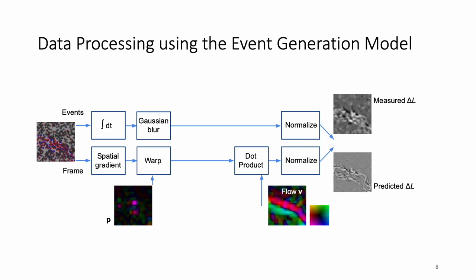Then, we can calculate a prediction of the brightness change using the frame data. The goal is to find the optical flow that minimizes the photometric error between this measurement and prediction. As mentioned before, the optical flow here is proportional to the spatial temporal derivative of the air density.